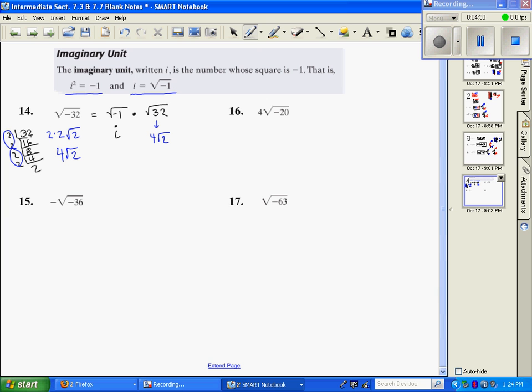To combine those, I'm just going to get 4i square root of 2. Let me rewrite that, 4i square root of 2.